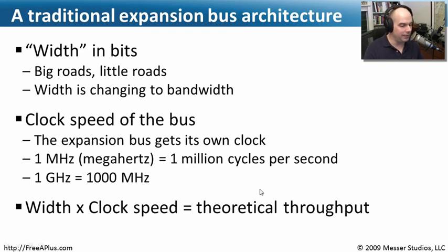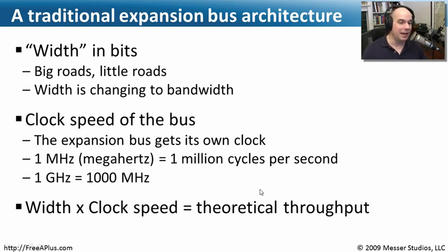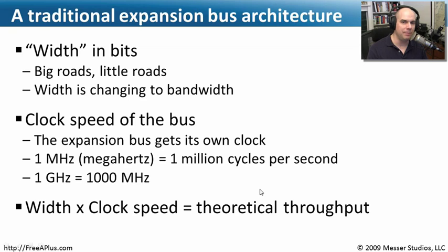If we look at the width of the bus and how fast it's going, we come up with a theoretical throughput — just how much traffic we're able to get through that system every cycle per second. The bigger the throughput, the faster your system is going to be. That's why whenever we look at our frontside bus, we want it to be really fast, because it needs to transfer data between the memory and the CPU as fast as possible.